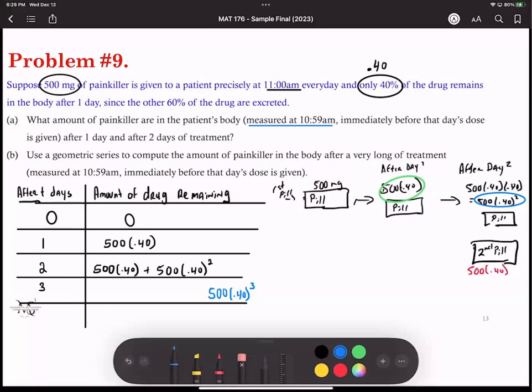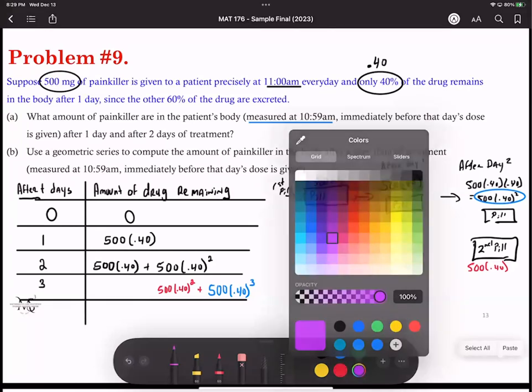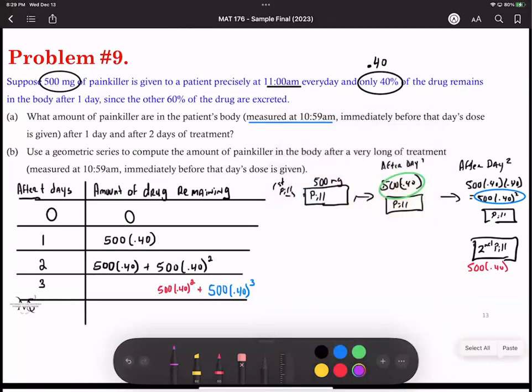But what happens now to your second pill? The second pill also has to be broken down, it's still getting broken down in the bloodstream. So that would have been 500 times 0.40 raised to the second power. And then remember you are continually taking this drug, so for day three now you got 500 times 0.40 to the first power. Oh I see the pattern, okay.